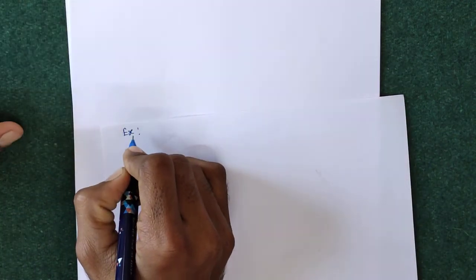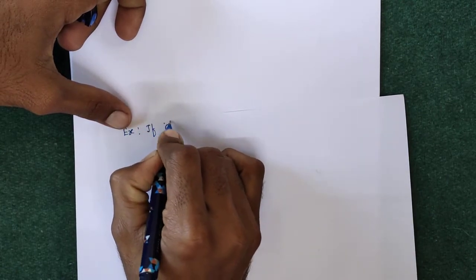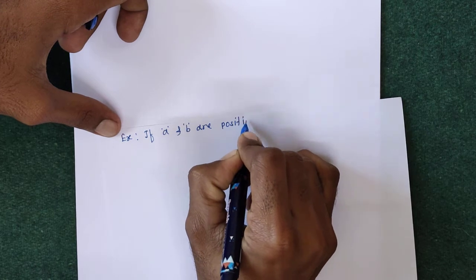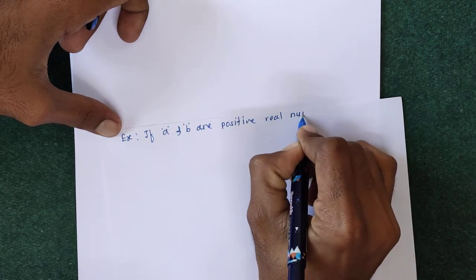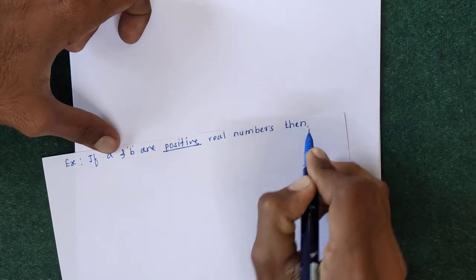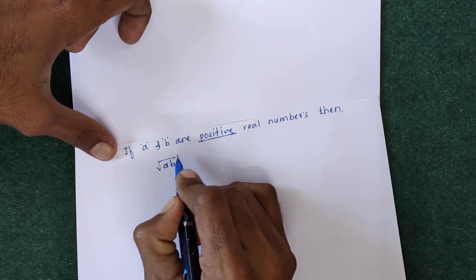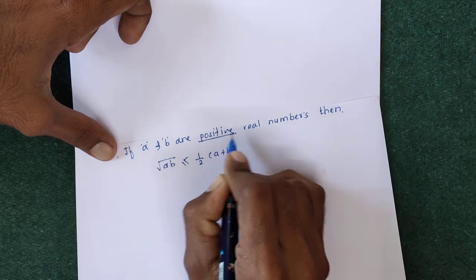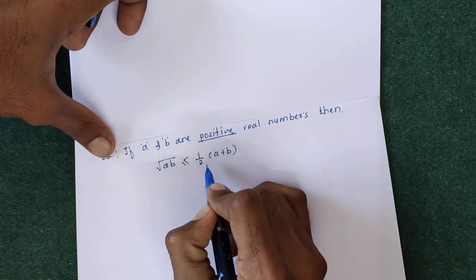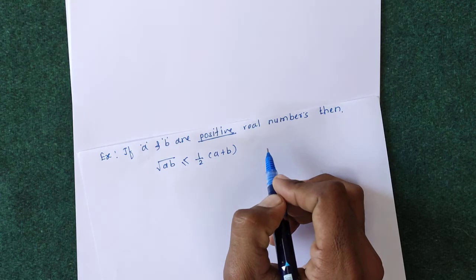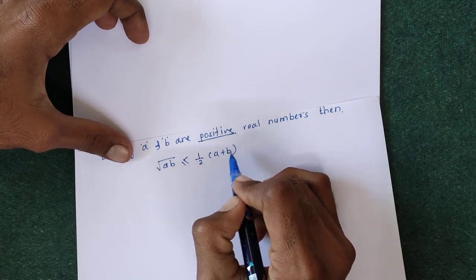The first example is: if A and B are positive real numbers, then we have to prove that √(AB) is less than or equal to ½(A + B). That is, we have to show that √(AB) ≤ ½(A + B).